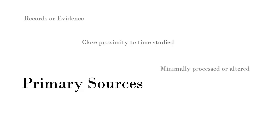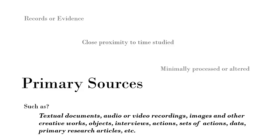They are minimally processed or altered and they're fixed in time. Primary sources could be any format or really anything that could pass along information. This can include textual documents, audio or video recordings, images, interviews, actions, sets of actions, data, primary research articles, and much more.